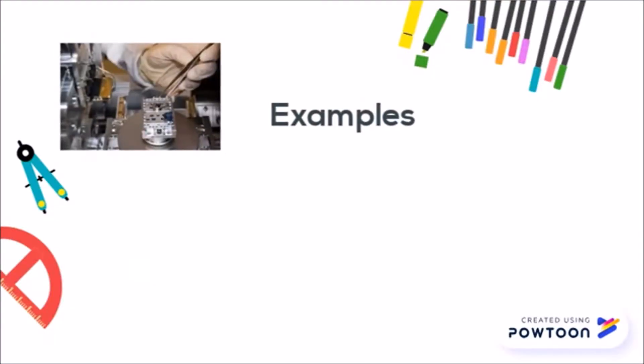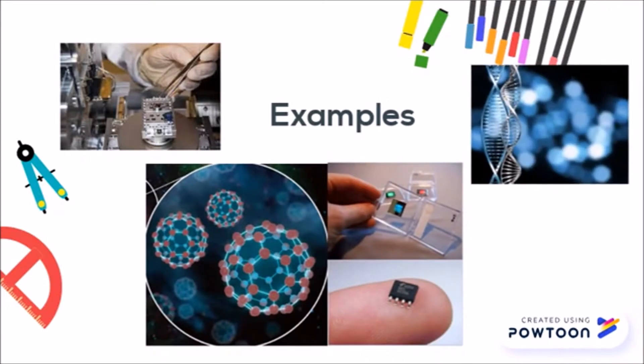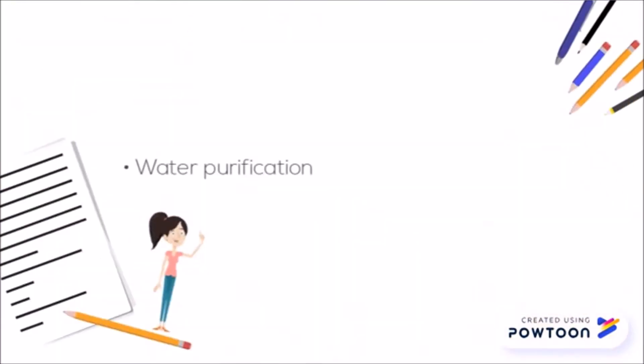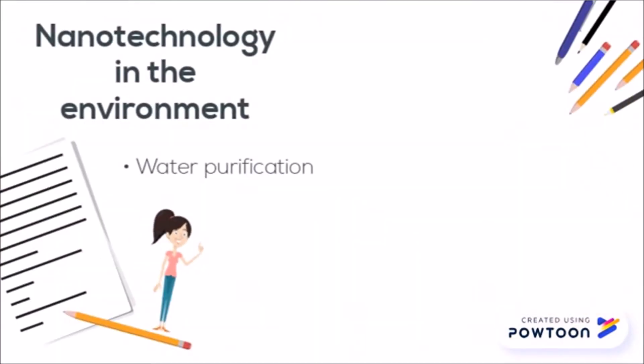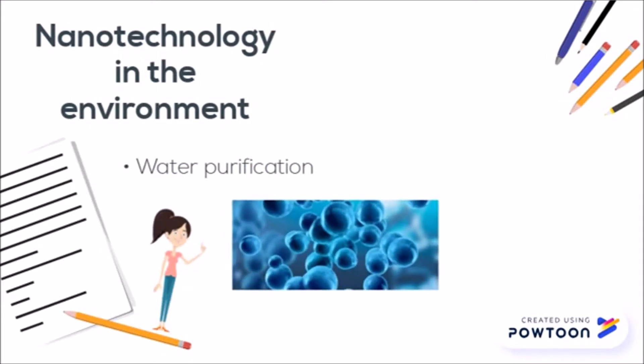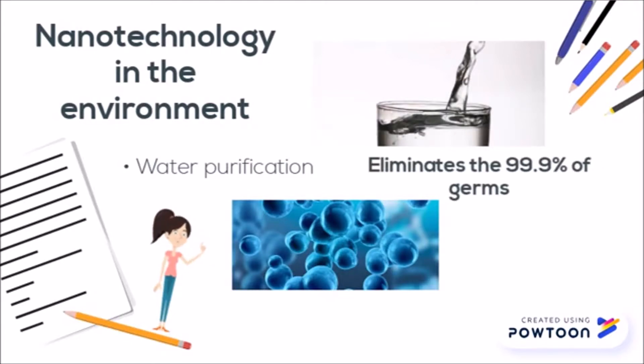Now, we will show you some examples where you can find the application of the different branches of nanometrology. Water purification: the filter is covered with silver nanoparticles that act as a purifier. Each sheet can purify 100 liters of water and eliminate 99.9% of germs.